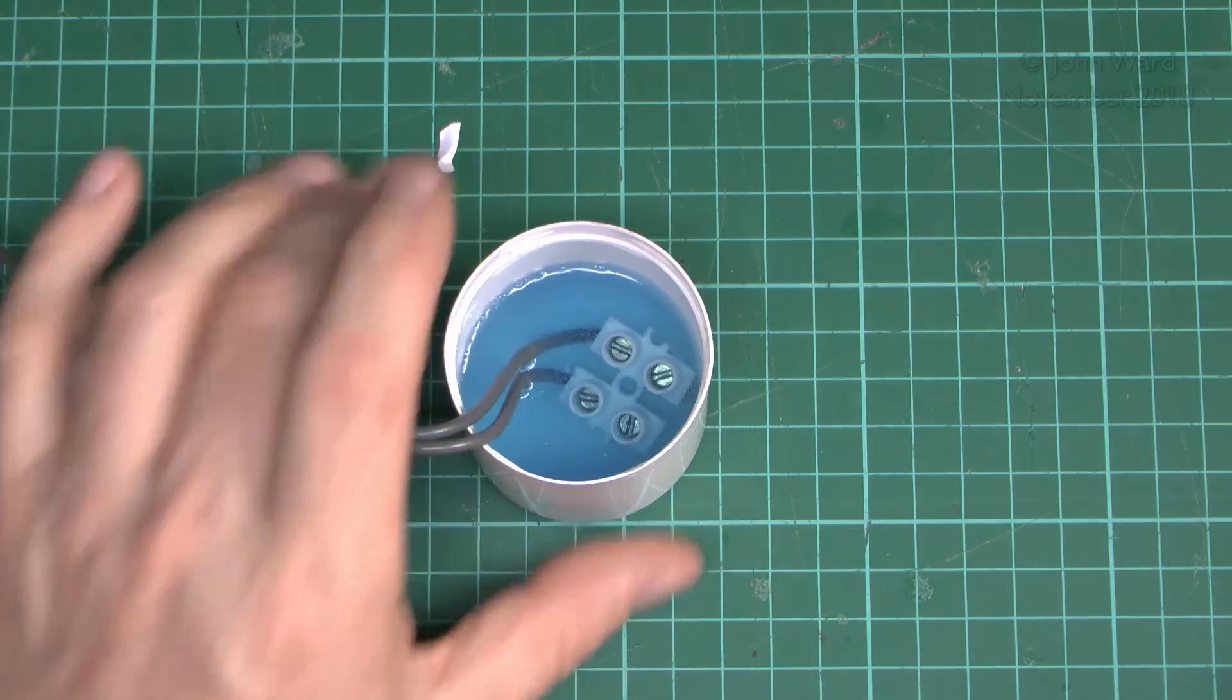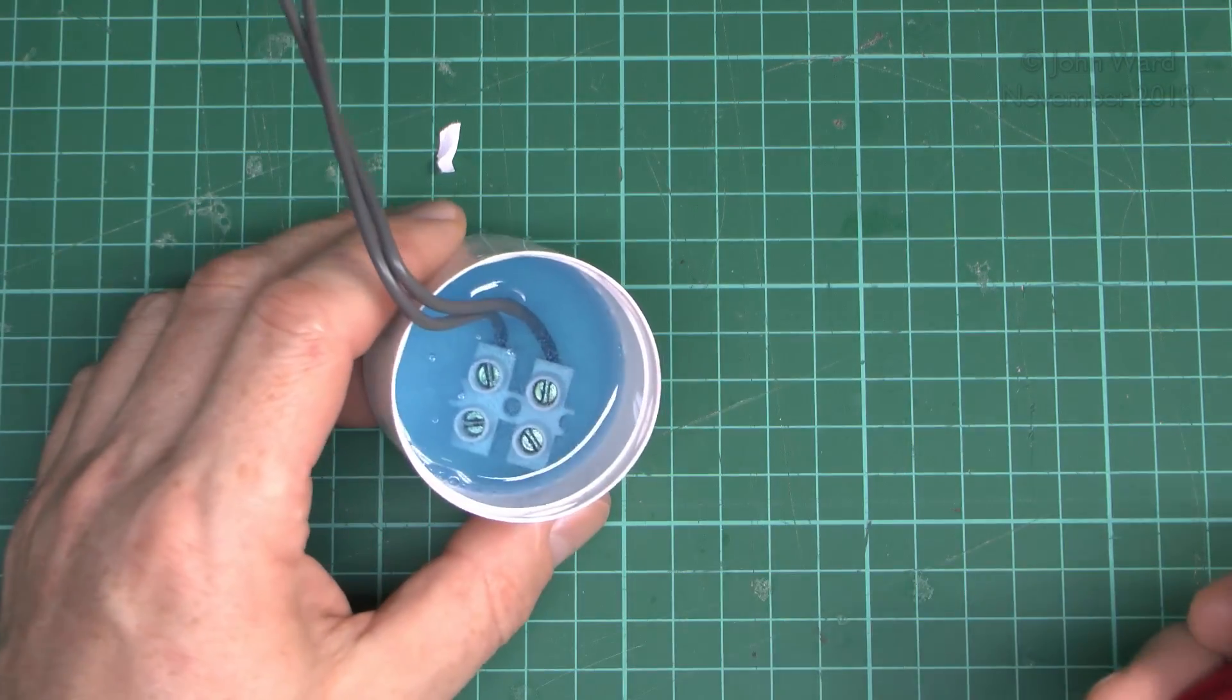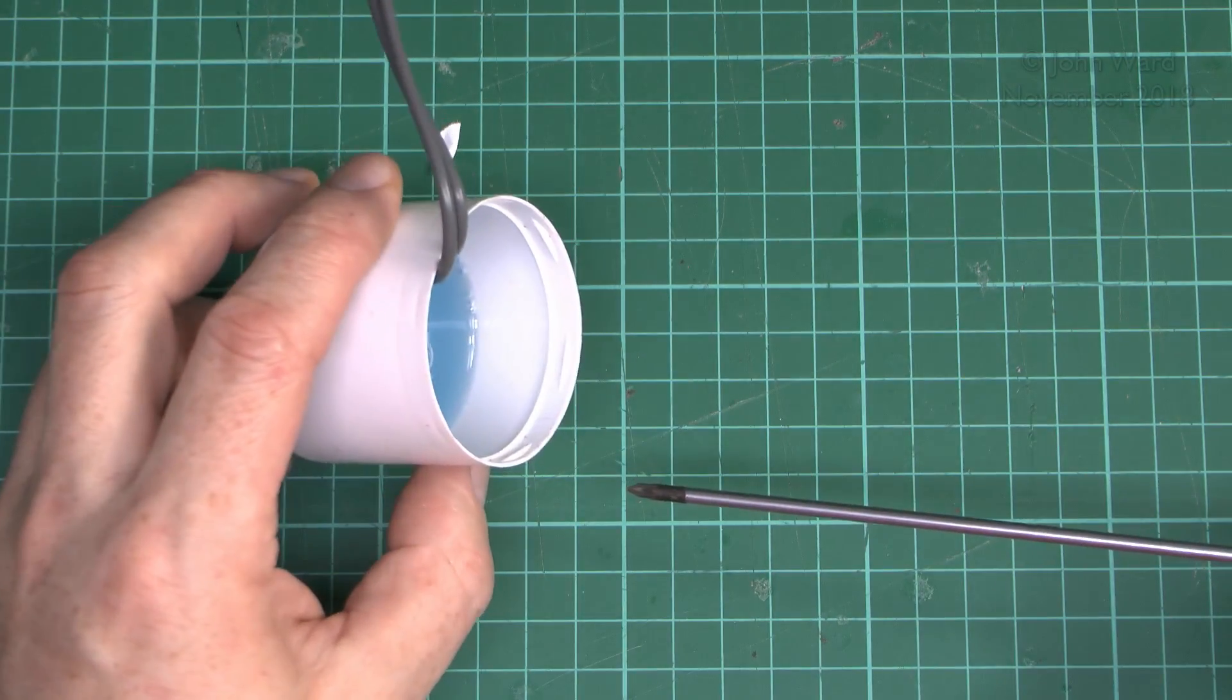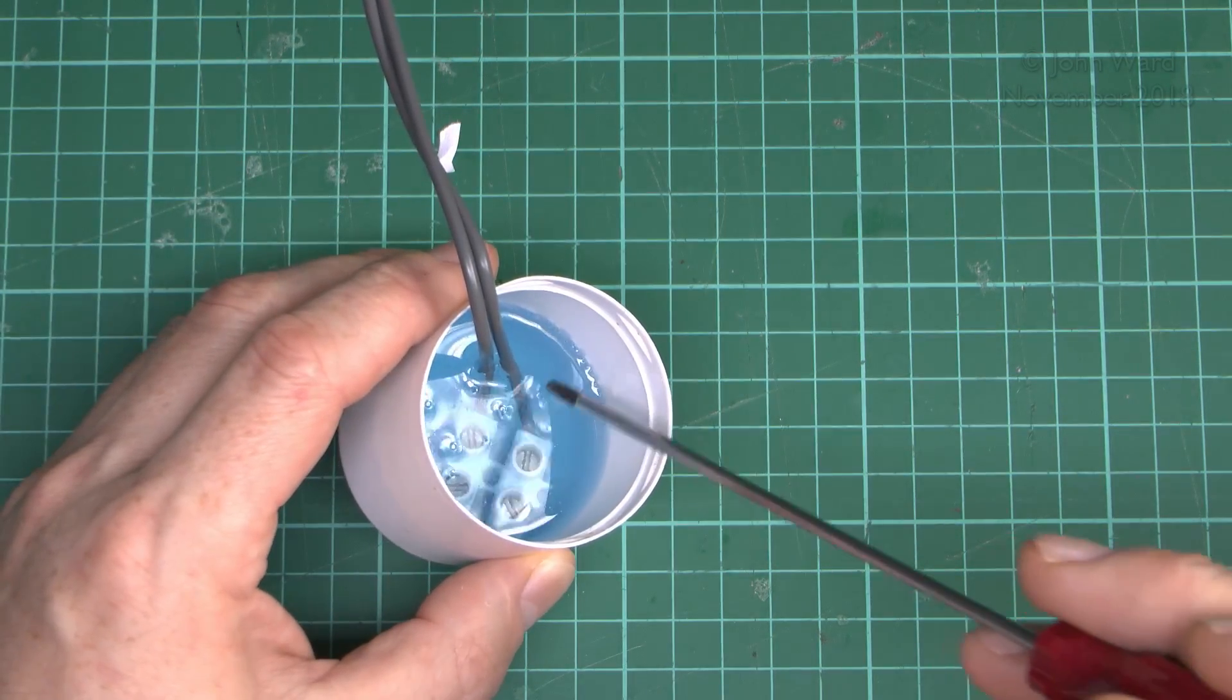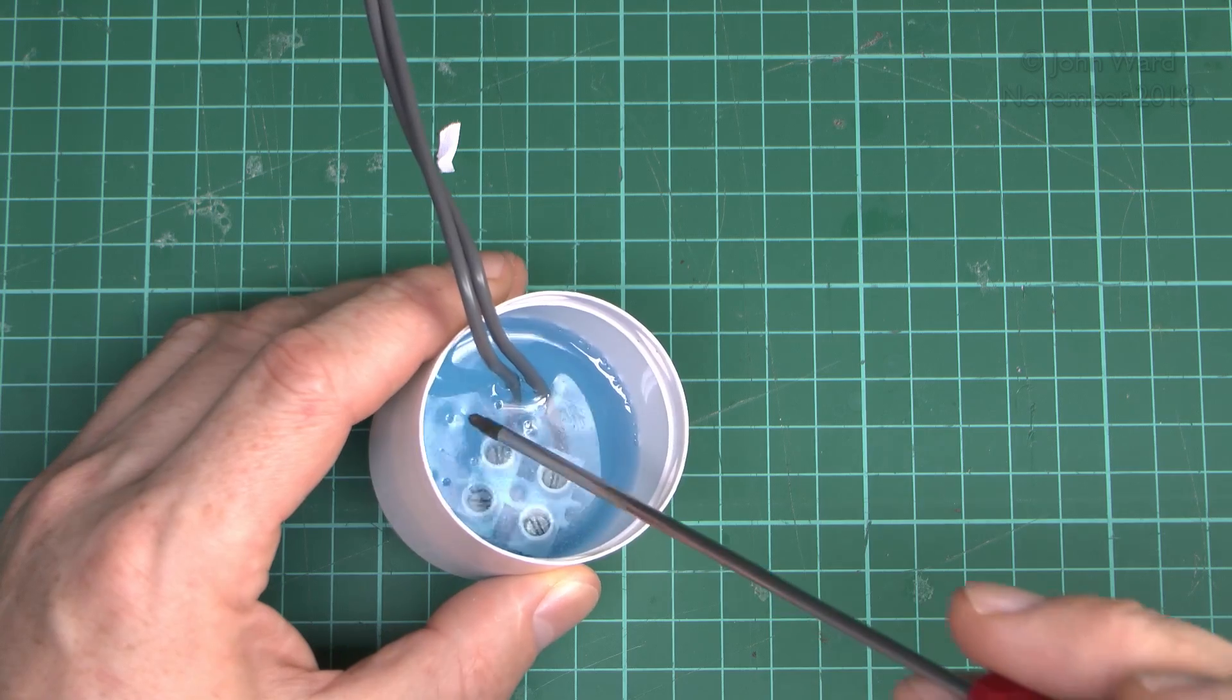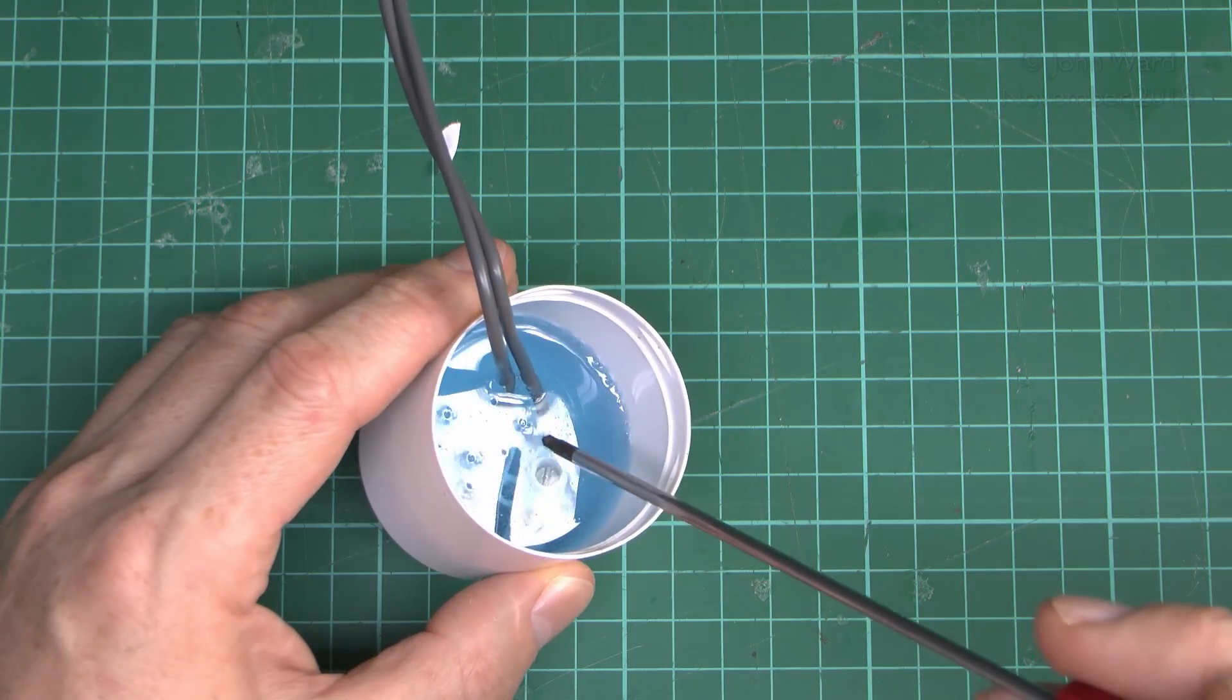Now I left this, so it's actually been about 10 minutes, I left it whilst doing some other stuff there. And we can see that now it's not actually liquid, so it's not pouring out of the container there. And it's turned into the gel type substance there.